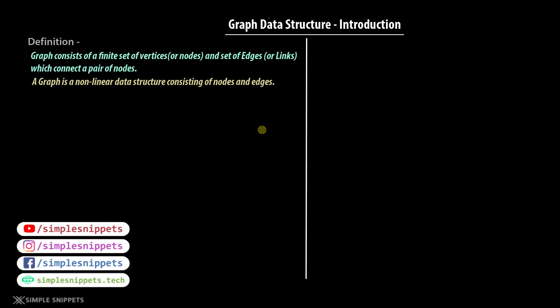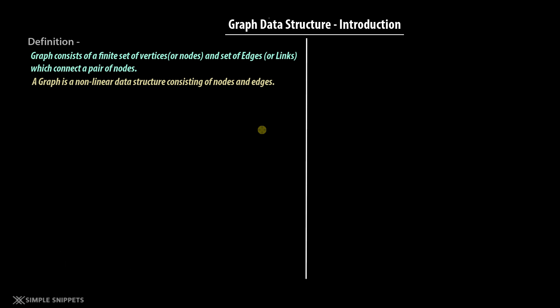Hey, what's going on guys, Tanmay here for Simple Snippets. In this video we are going to start off with a very important topic under the DSA playlist which is graph data structure. Yes, finally it's happening. This video is going to be just the introduction where we talk about what is graph data structure, compare it with the tree data structure, understand some important terms and concepts, and see some examples and types. So from a beginner's point of view who's starting off with graphs in DSA, this is very important.